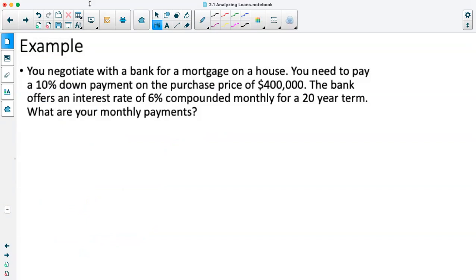Next example, you negotiate with a bank for a mortgage on a house. You need to pay a 10% down payment on the purchase price of $400,000. The bank offers an interest rate of 6% compounded monthly for a 20-year term. What are your monthly payments? So the very first thing I would do is figure out how much money we are actually borrowing, because we're not actually borrowing the full $400,000. We're having to pay 10% first. So what I'll do is I'll multiply my $400,000 by 10% which as a decimal is 0.1. So that's going to be $40,000 is our down payment.